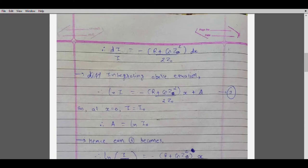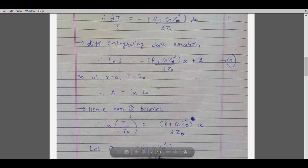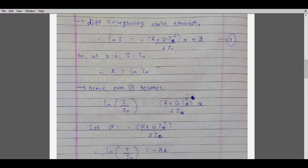To find the constant A, we apply the boundary condition: at x equals zero, the value of I equals I0. Substituting these values gives A equals the natural logarithm of I0. Putting this back and rearranging, we get the natural logarithm of I minus the natural logarithm of I0, which equals the natural logarithm of I divided by I0. This follows the simple logarithm rule: log A minus log B equals log A over B.